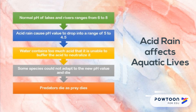When water contains too much acid, it will no longer be able to buffer the acid rain. When water loses its ability to buffer acid, some species in the ecosystem will die. Without some of the species that predators feed on, predators will also die. This is how acid rain affects aquatic lives.